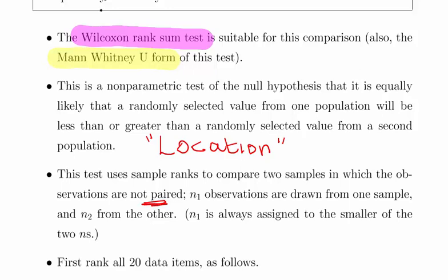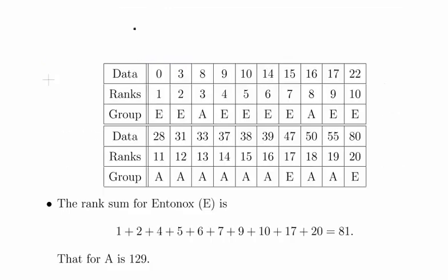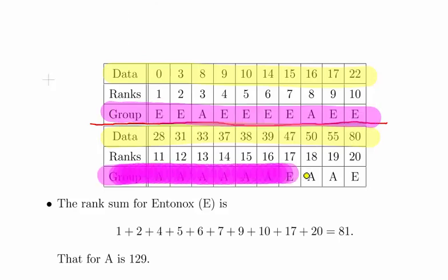Quite often there's conventions. For example, N1 is always assigned to the smaller of the two sample sizes. First, rank all 20 items as follows. This is what you should have done previously. It's just sort of split that there into two, or this is just to fold it over on itself.